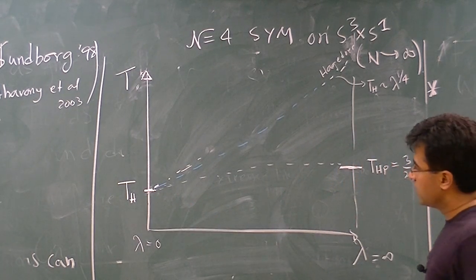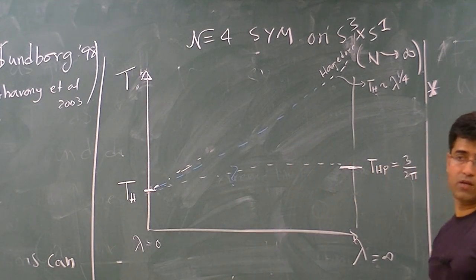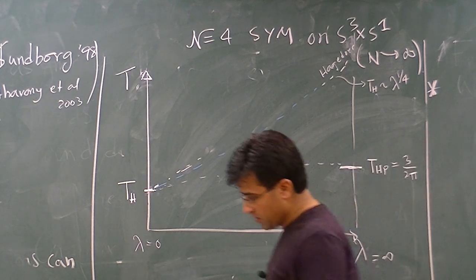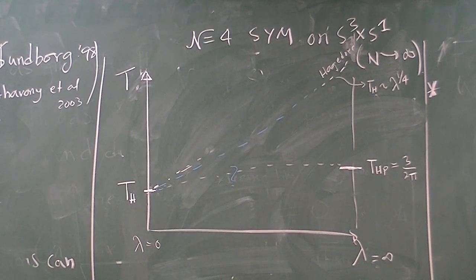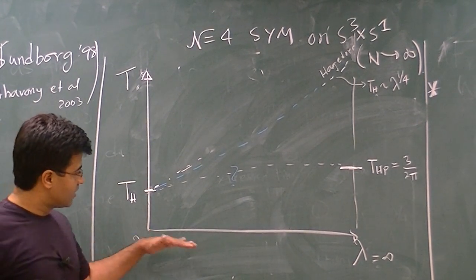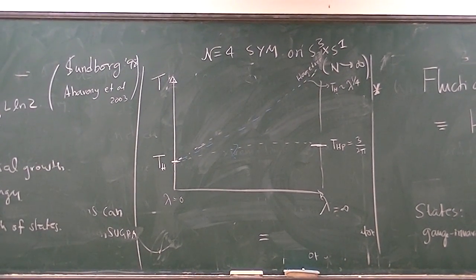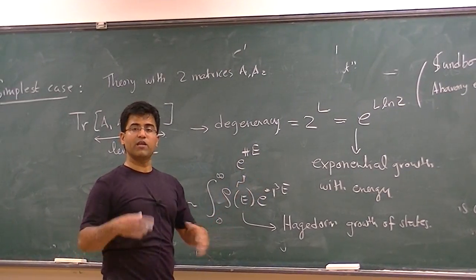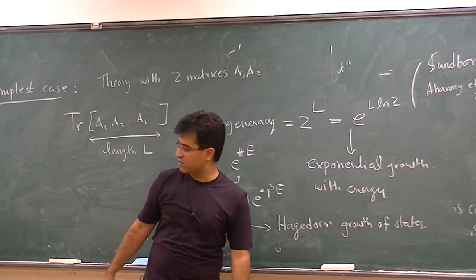So what we know is that at lambda equals zero, the deconfinement transition and the Hagedorn transition merge. And so really, this Hagedorn line is most likely doing something like that. So at zero 't Hooft coupling, the deconfinement and Hagedorn temperatures coincide. And then at finite temperature, there's a first order line there. So that's one possibility, but one doesn't actually know exactly what happens in this region. So that's the situation for N equals four with temperature at two different values of the 't Hooft coupling.